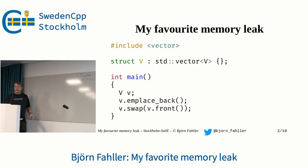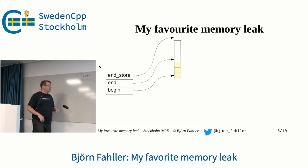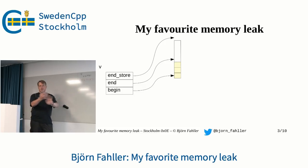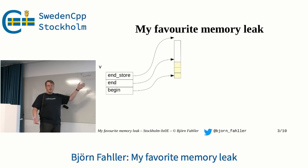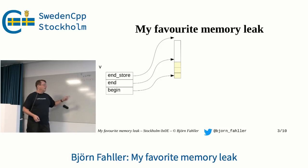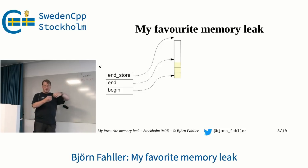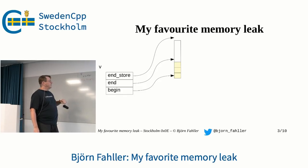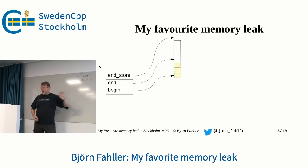Are you familiar with how a vector works internally? A typical implementation looks like this. A vector V has three pointers: a begin pointer that points to the beginning of an allocated store, an end pointer that is one past the last element, and then an end pointer that points past the end of the raw memory store. In this case, we have a vector V that has allocated a chunk of memory and it has three elements in it.